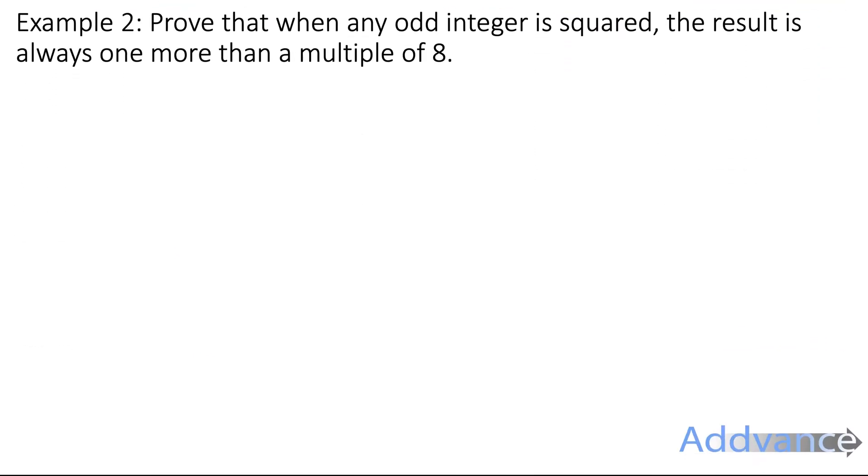Example 2. Prove that when any odd integer is squared, the result is always 1 more than a multiple of 8. So we need an odd number, an odd integer, an odd number. Integer just means number. So we get 2n plus 1. That's what an odd number looks like. And we're going to square it.